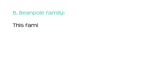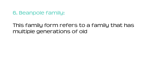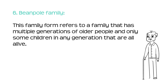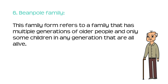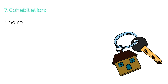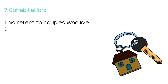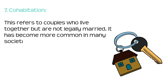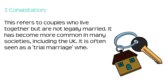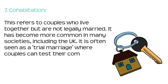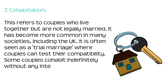Number six: beanpole family. This family form refers to a family that has multiple generations of older people and only some children in any generation that are all alive. Number seven: cohabitation. This refers to couples who live together but are not legally married. It has become more common in many societies, including the UK. It is often seen as a trial marriage where couples can test their compatibility. Some couples cohabit indefinitely without any intention of marrying.